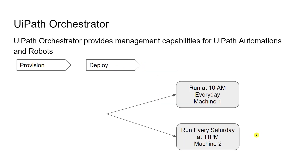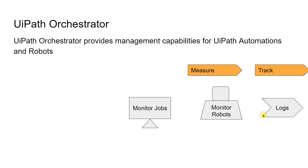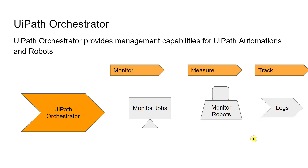The third capability is triggers. Triggers mean scheduling — for example, you can schedule automation to run every day at 10 AM on a given machine, or every Saturday at 11 PM. Using UiPath Orchestrator you have the capability of scheduling or setting up triggers. Similarly, there are also a couple more capabilities: monitor, measure, and track.